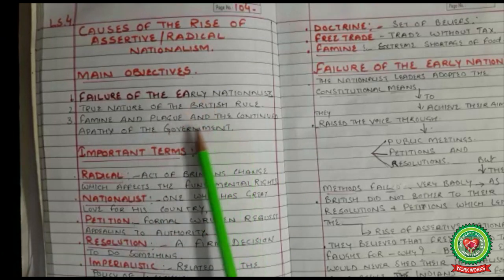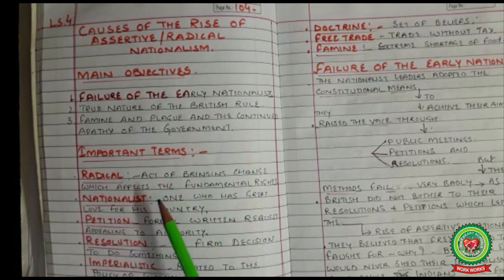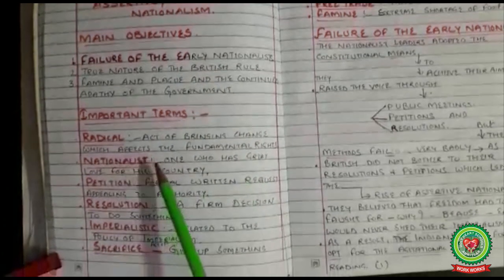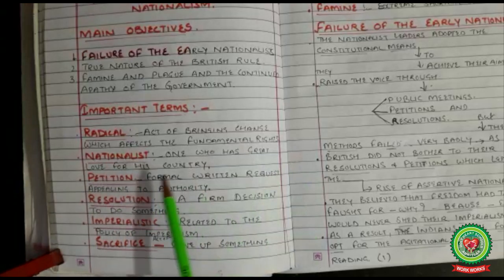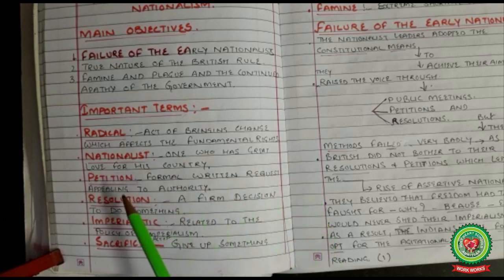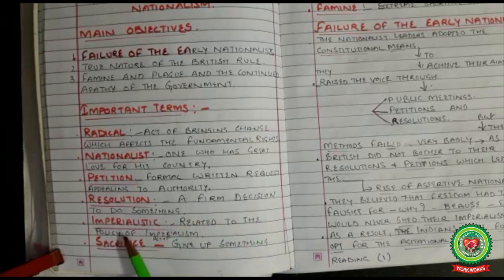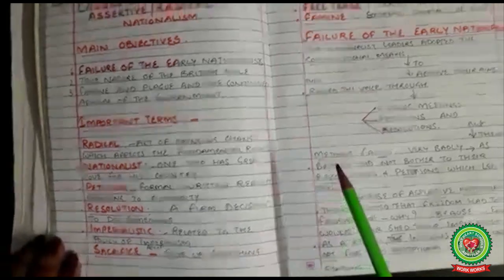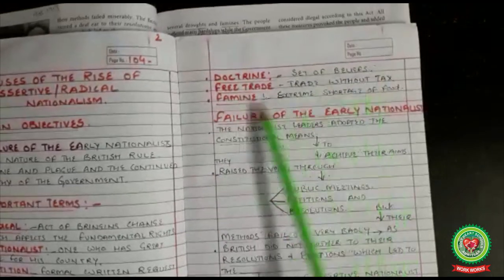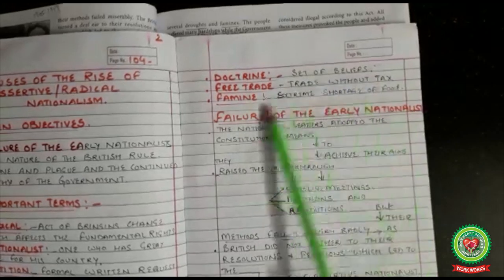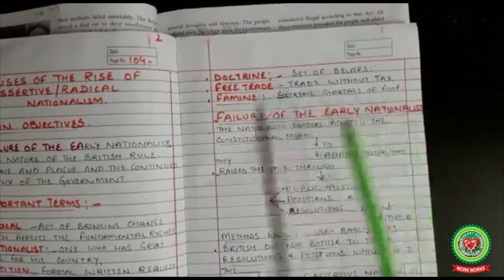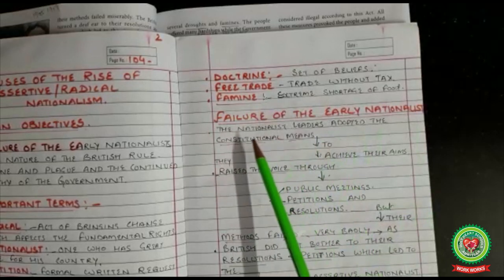Before discussing these causes, we must know the following terms. Radicals: act of bringing change affecting fundamental rights. Nationalist: one who has great love for his country. Petition: formal written request appealing to authority. Resolution: a firm decision to do something. Imperialistic: related to the policy of imperialism. Sacrifice: act of giving up something. Doctrine: set of beliefs. Free trade: trade without tax. Famine: extreme shortage of food.